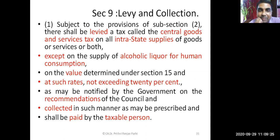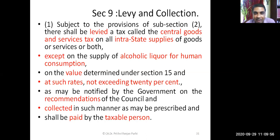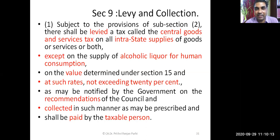Section 9(1) further says: except on the supply of alcoholic liquor for human consumption — that means alcoholic liquor is exempted. The tax will be levied on the value determined under Section 15. There is a need to understand what is the value determined under Section 15. The rate shall not exceed 20%, so the maximum rate is 20%.